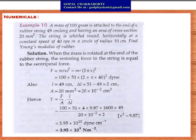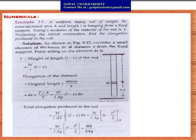Numerical Problem 5: A uniform heavy rod of weight W, cross-sectional area A, and length L is hanging from a fixed support. Young's modulus of the material is Y. Find the elongation produced in the rod. The force on an element at distance x from the top equals the weight of the portion (L - x) below it: F = (W/L)(L - x). Elongation of the element dx is dδ = F dx / (AY) = (W / LAY)(L - x) dx. Total elongation = ∫₀ᴸ (W / LAY)(L - x) dx = WL / 2AY.